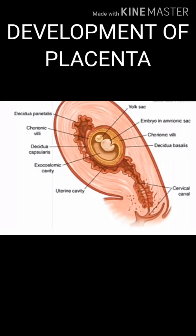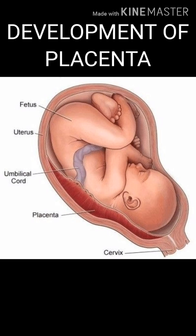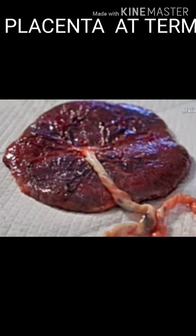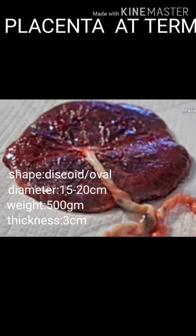The principal fetal part is developed in the Chorionic Frontosum. The maternal component is developed in the Decidua Basalis. The placenta begins development around the 6th week of pregnancy and is fully developed by the 12th week.